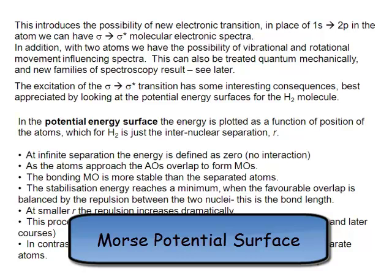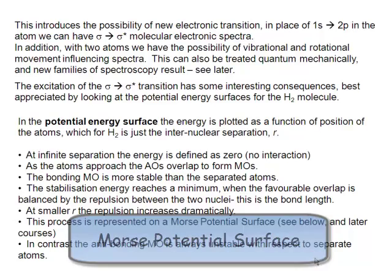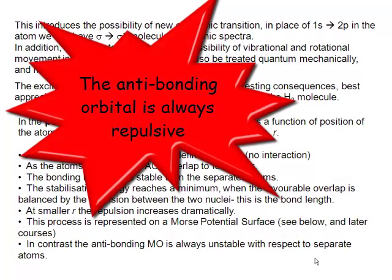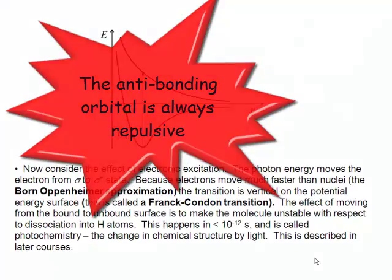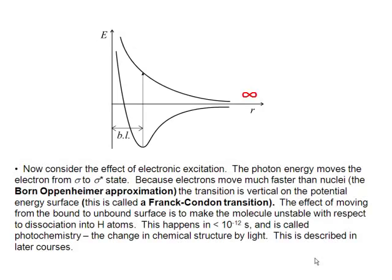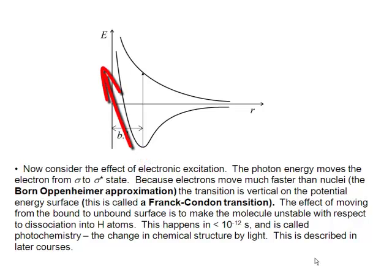The Morse potential surface tells us something about the nature of the bond formed between diatomic molecules. In the case of the hydrogen molecule, we make the bonding orbital and also the antibonding orbital. Starting right out at infinity, as the atoms approach, their atomic orbitals begin to overlap and the bonding orbital forms, coming down until we reach the equilibrium bond length. At that point, nuclear repulsion starts to take over and the energy shoots right up.